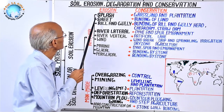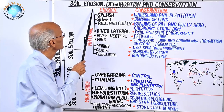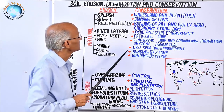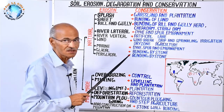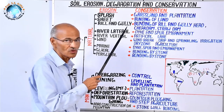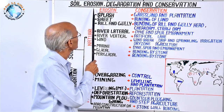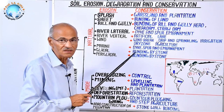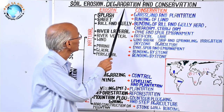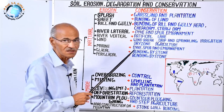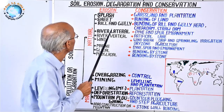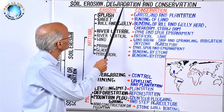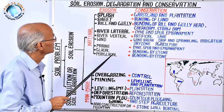Soil erosion means transportation of soil from one place to another by exogenic forces. Soil degradation means the degradation or decrease in the quality of soil in situ. In erosion the place of soil is changed; in degradation, soil place is not changed — rather, in situ, it undergoes degradation. Thus these are the two problems: soil erosion is one, and soil degradation or soil pollution is the other.